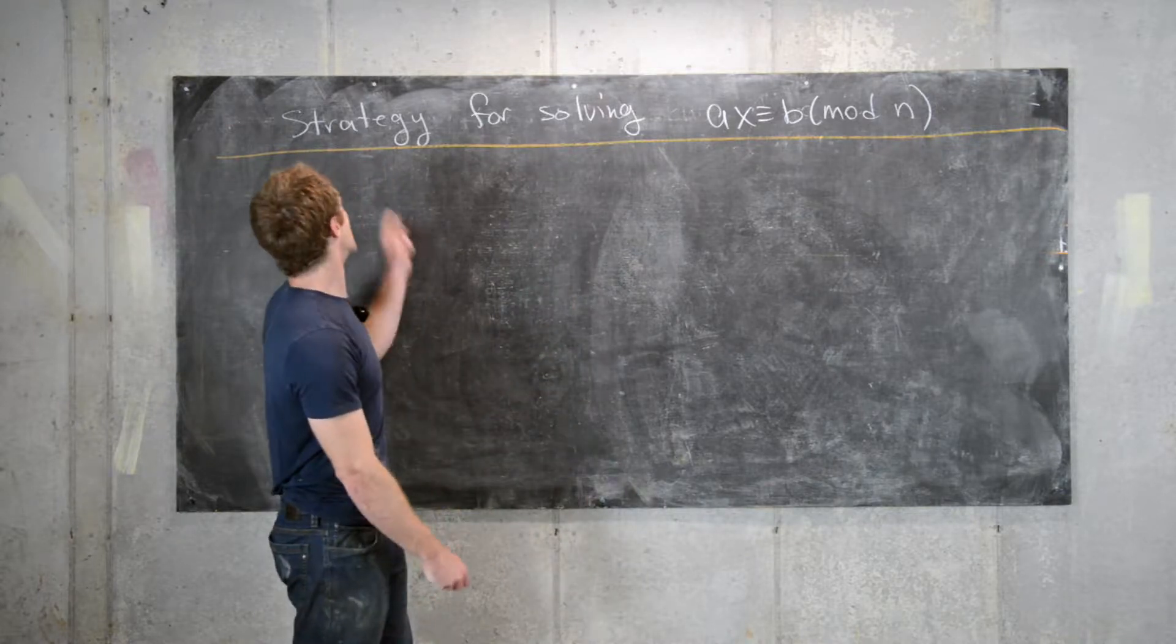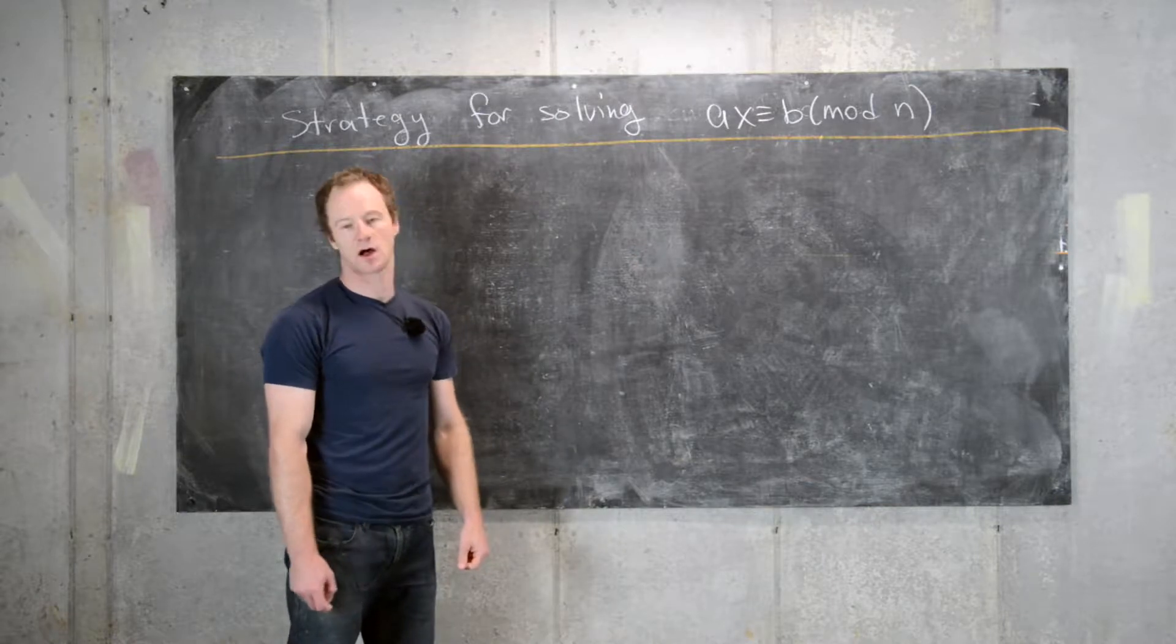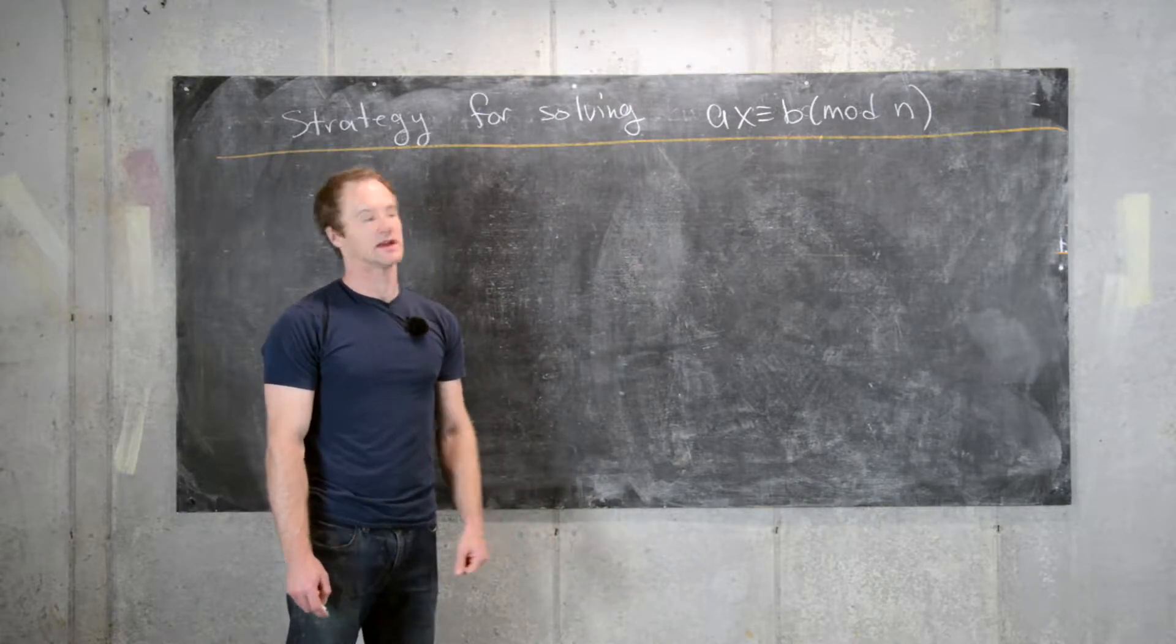Okay, so in this video we're going to outline a strategy for solving linear congruences Ax is congruent to b mod n, and then we'll look at an example.